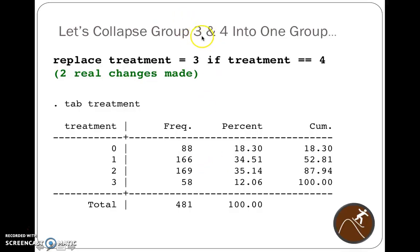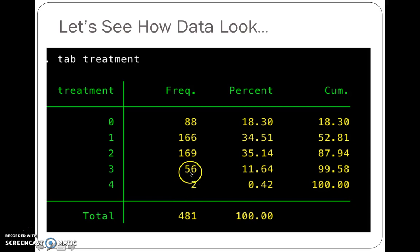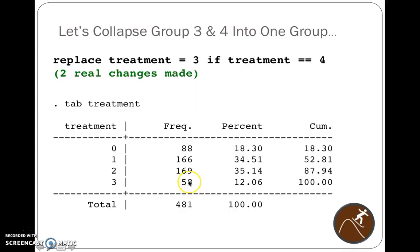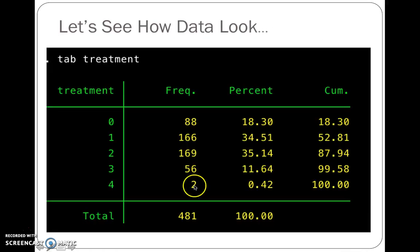So let's collapse group three and four into one group. So if the variable treatment was four earlier, let's make four become three. So let's replace treatment equals three if treatment is equal to four. And then we hit tab treatment, and we can see that we switched the 56 and two to now an additive of four to three.